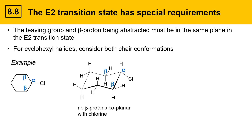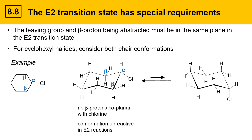Therefore, there are no protons coplanar with the chlorine in this particular conformation, and this conformation is unreactive in E2 reactions. This is a theme with halo cyclohexanes: when the halogen is equatorial, they're unreactive. This molecule can chair flip, and the chair-flipped version has the chlorine in an axial position.